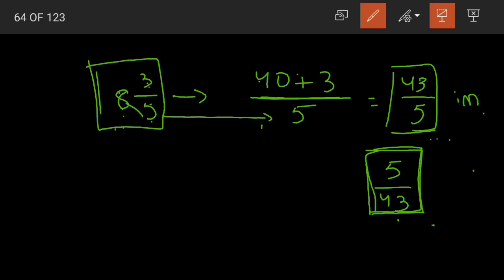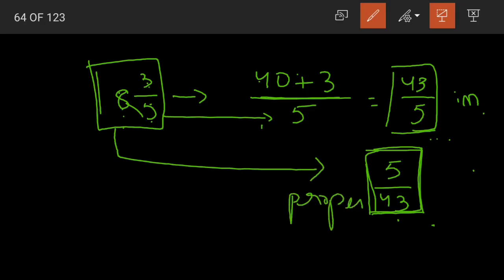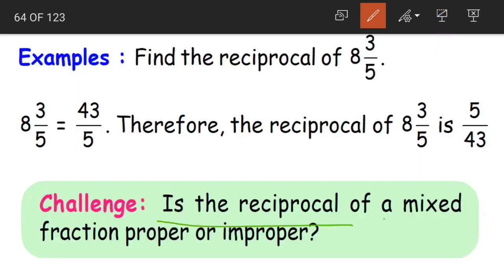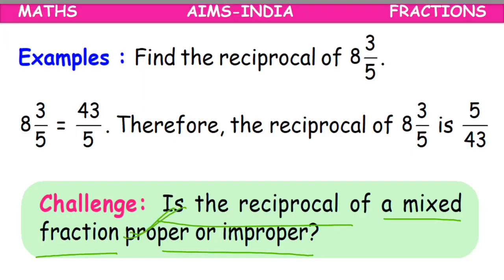The reciprocal of a mixed fraction is a proper fraction. Why? Because a mixed fraction is always an improper fraction. And the reciprocal of an improper fraction is always a proper fraction. So the reciprocal of a mixed fraction is always a proper fraction.